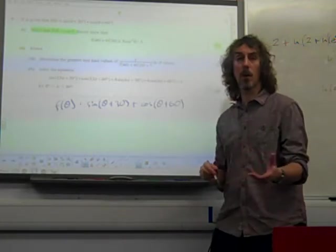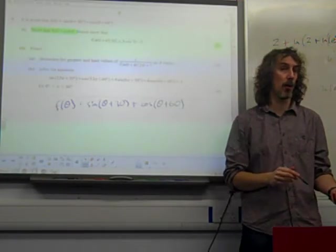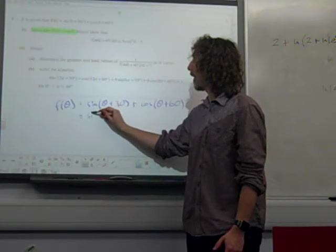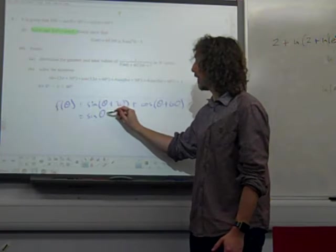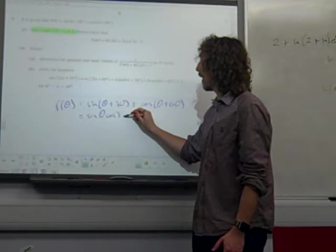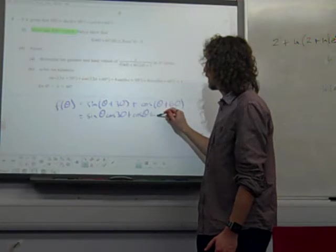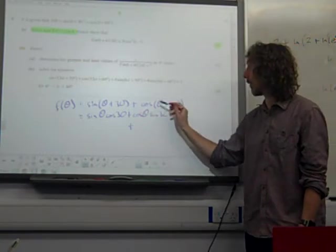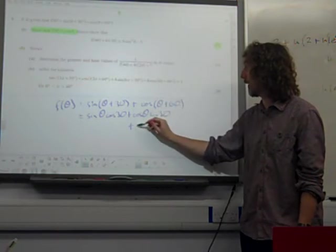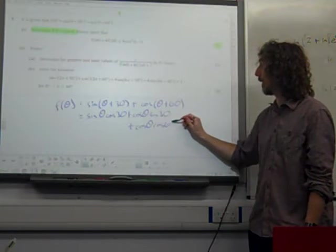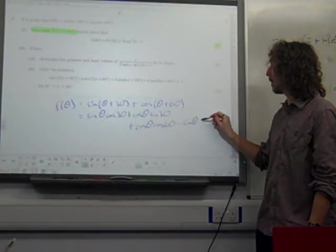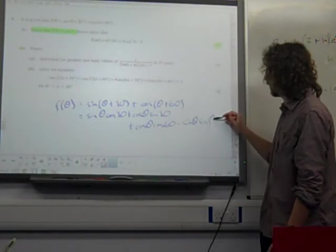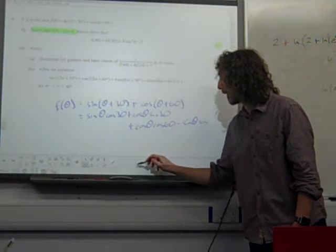Now, this is another show that. We've got to be thorough in our showing that. So sine theta plus 30 is, that's sine a plus b, sine theta cos 30 plus cos theta sine 30. And cos theta plus 60 is cos a plus b, so that's cos a cos b minus sine a sine b, so that's 60 there.